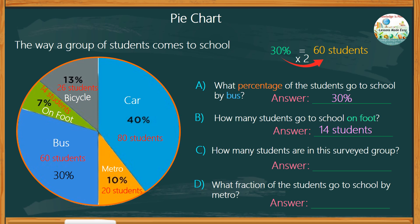So how many students are in this surveyed group? Let's add 14 plus 26 plus 80 plus 20 plus 60. We get a total of 200 students. So for our last question, what fraction of the students go to school by metro? That would be 20 out of 200, or 1 over 10.